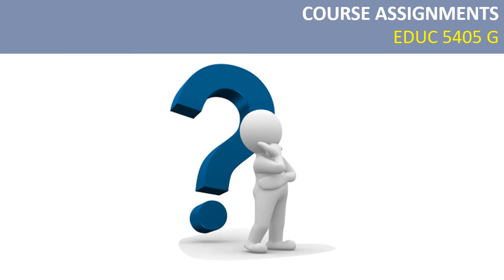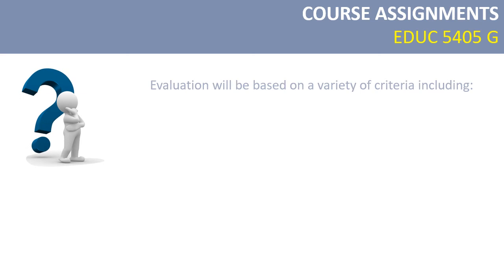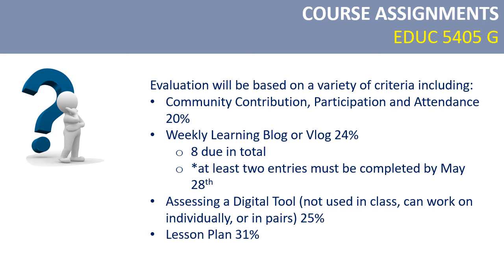Now let's talk about what you'll actually have to turn in for this course and what your assignments will look like. We are going to have four major assignments for this term. The first is the participation grade — participating in the Adobe Connect sessions, participating in the weekly discussion forums, participating in things like creating the ThingLink introduction, as well as a number of activities throughout the term. There's a detailed rubric on the course site to tell you how you'll be evaluated for that.